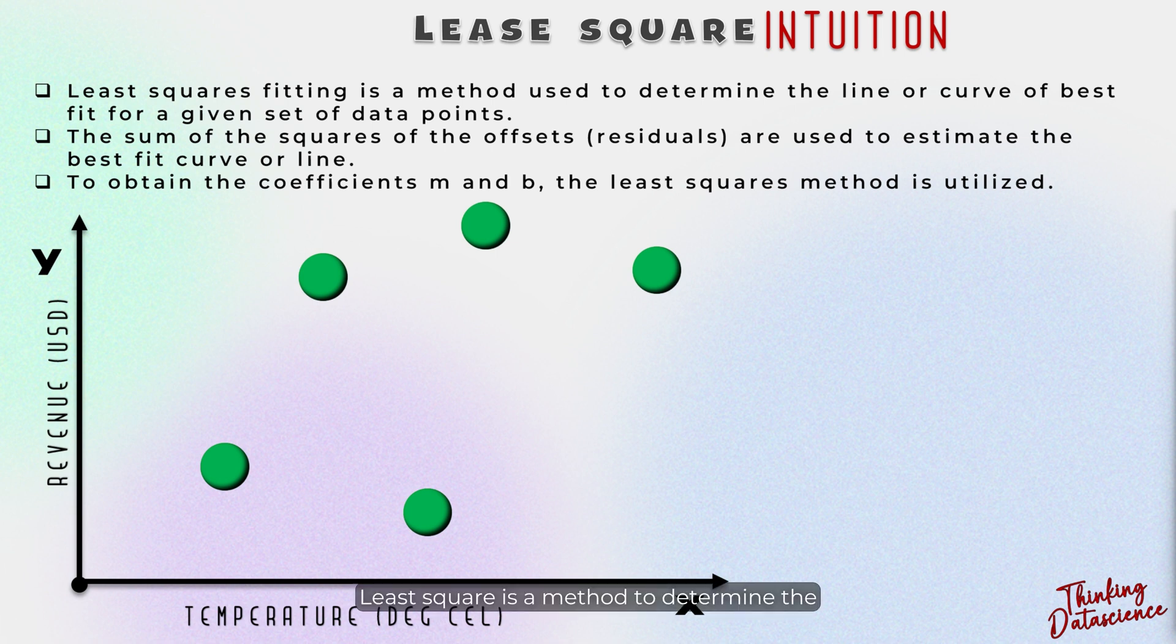Least square is a method to determine the best fit curve or line for the given set of points. It aims to minimize the sum of the square distance between the points and the fitted line. Essentially, it is a technique to find the line that best represents the overall trend of the data.